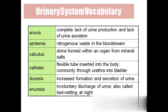Anuria: 'urea' means related to urine, so 'anuria' means absence of urine — a complete lack of urine production. Due to some kidney damage or kidney failure the urine is not produced at all. In any medical term, if 'a' or 'an' is used as a prefix, it means absence.